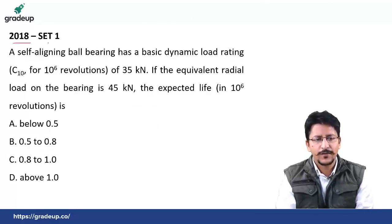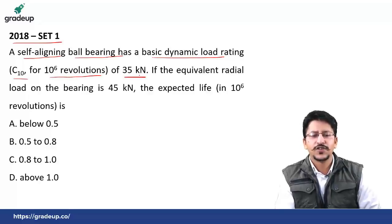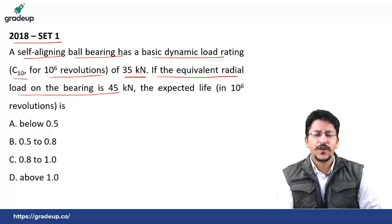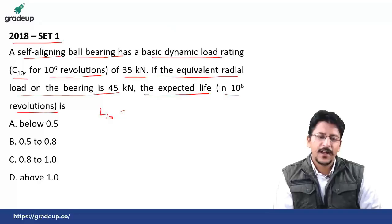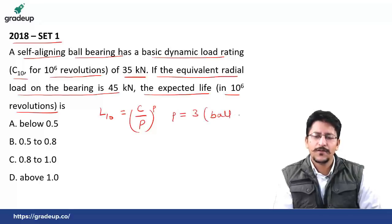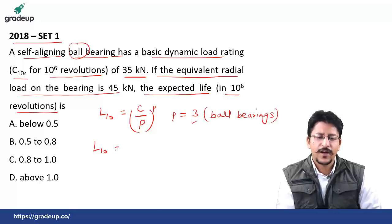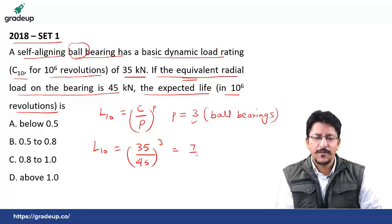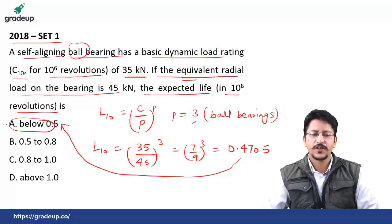Last question for this session, 2018 Set 1: a self-aligning ball bearing has a basic dynamic load rating C10 = 35 kilonewton (for 10⁶ revolutions). The equivalent radial load on the bearing is 45 kilonewton. Find the expected life in 10⁶ revolutions. Using L10 = (C/P)^p, where p = 3 for ball bearings: L10 = (35/45)³ = (7/9)³ = 0.4705 × 10⁶ revolutions. Since this is below 0.5, the correct answer is 0.5.